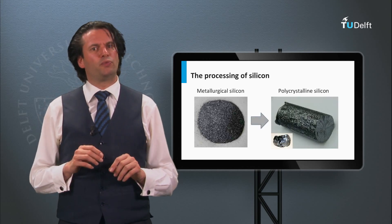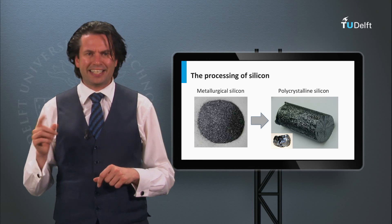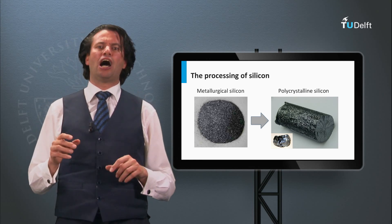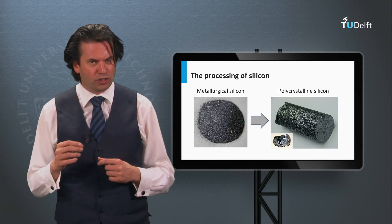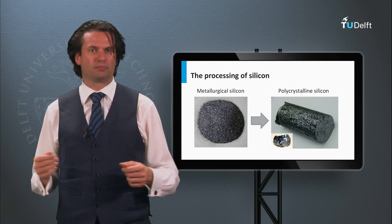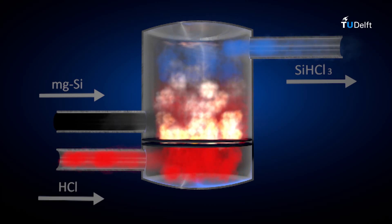The silicon material with the next level of purity is called polysilicon. In the next animation you see how out of metallurgical silicon rods of polysilicon are produced. The source material is powder of metallurgical silicon.